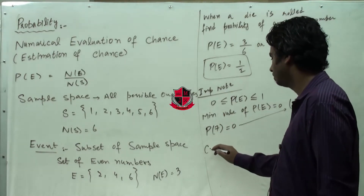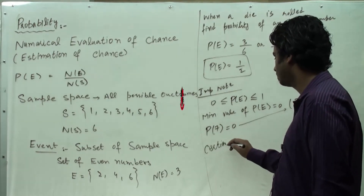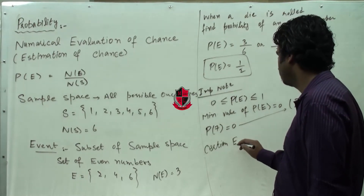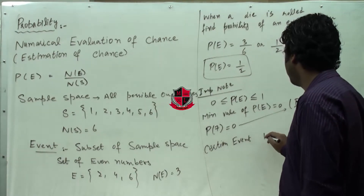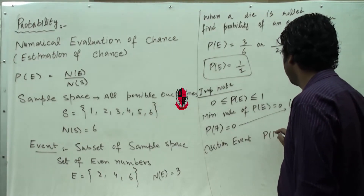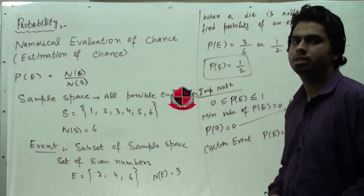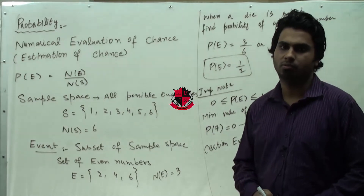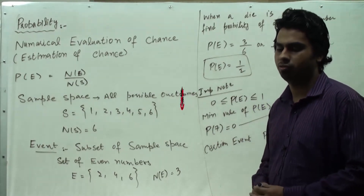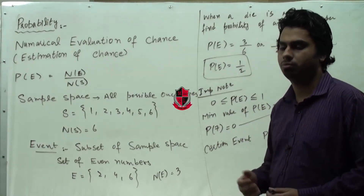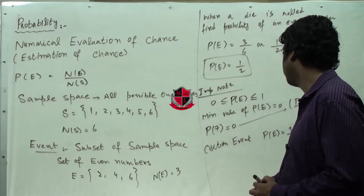Certain event: if the probability of an event comes to 1, then this event will be a certain event. We have a 100% chance of that possible outcome. So this is known as a certain event.